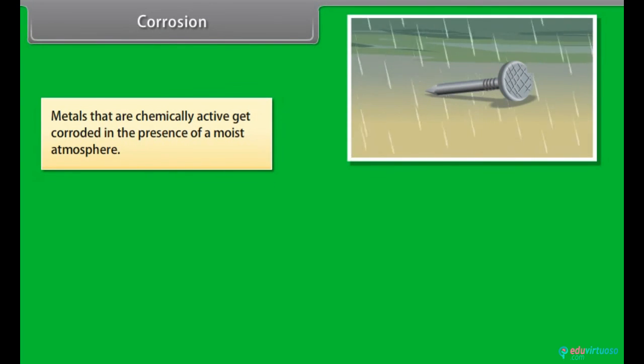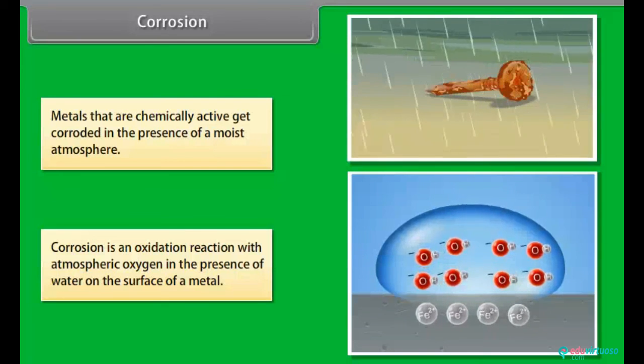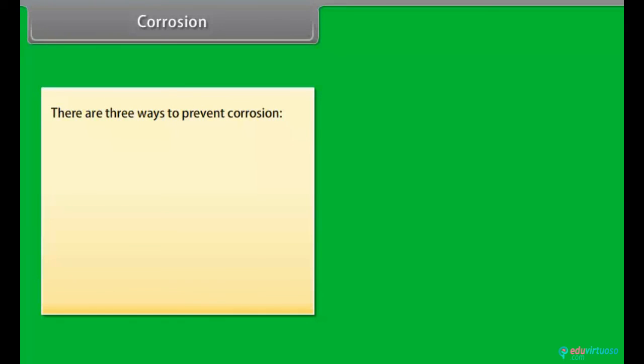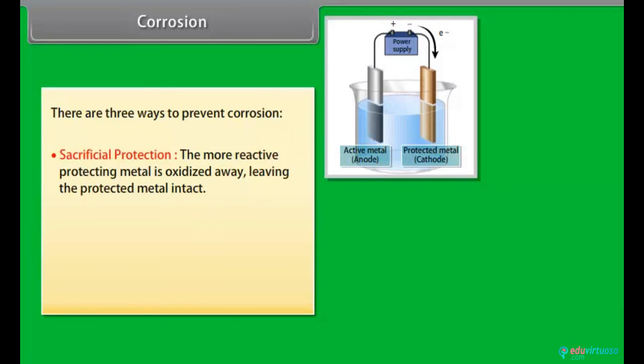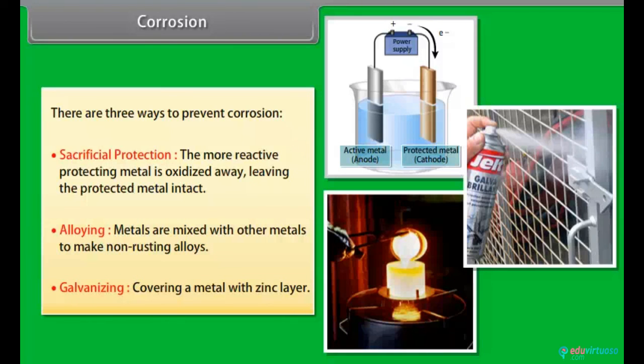Corrosion. Metals that are chemically active get corroded in the presence of a moist atmosphere. Corrosion is an oxidation reaction with atmospheric oxygen in the presence of water on the surface of a metal. For example, iron and aluminum corrode. However, non-reactive metals like gold, platinum, mercury do not corrode. There are three ways to prevent corrosion. Sacrificial protection where the more reactive protecting metal is oxidized away, leaving the protected metal intact. Alloying where metals are mixed with other metals to make non-rusting alloys. Galvanizing where a metal is covered in thin zinc layer. This layer is produced by electrolytic deposition.